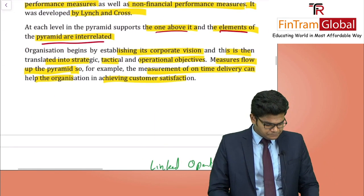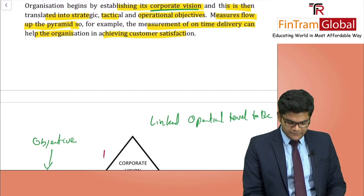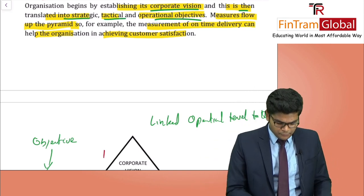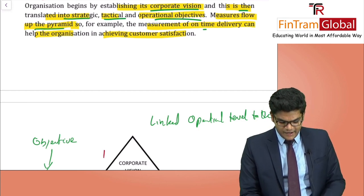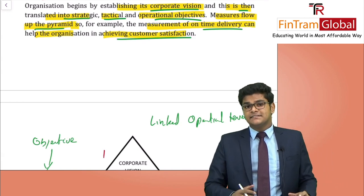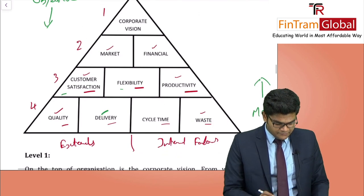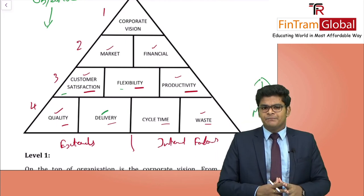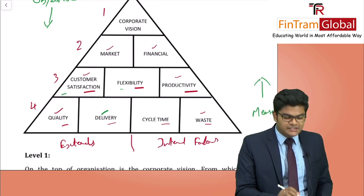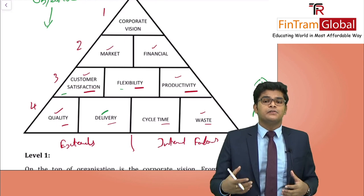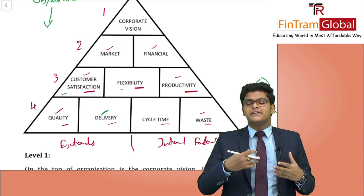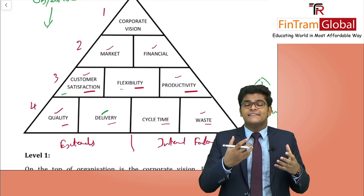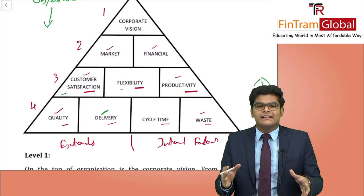The organisation begins by establishing its corporate vision, translated into strategic, tactical, and operational objectives. Measures flow up the pyramid. For example, measuring on-time delivery can help the organisation achieve customer satisfaction. If we excel in delivery, customer satisfaction increases, flexibility also increases, and then we gain more market share, ultimately achieving the corporate objective. There is a clear route from the lower-level measure all the way up to the corporate vision.